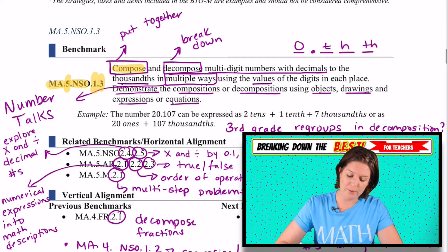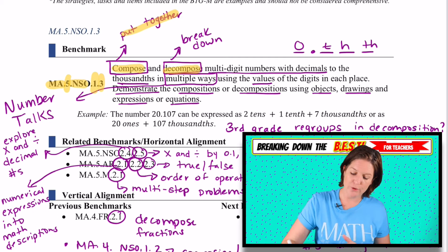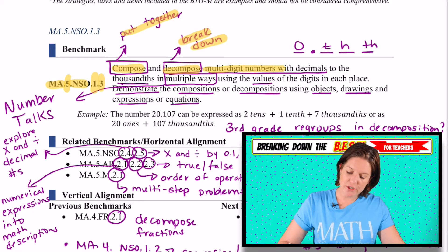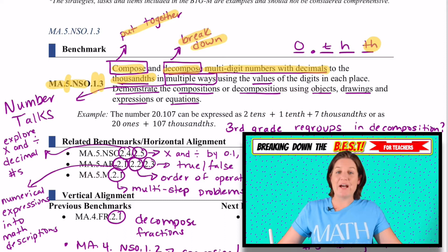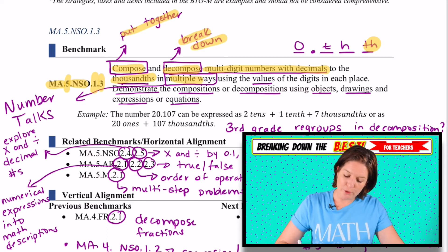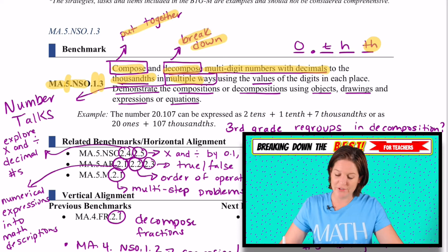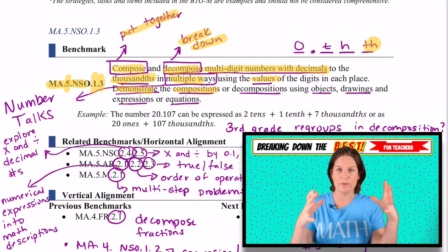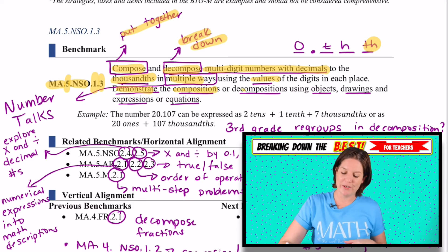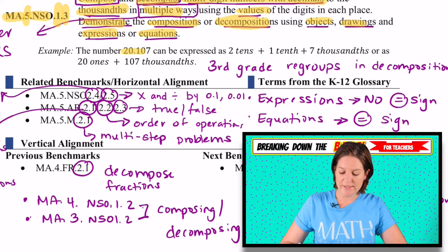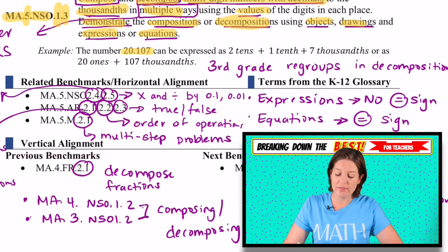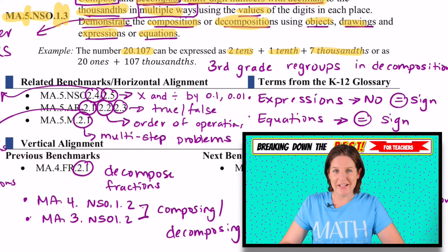It says compose, which means to put together, and decompose, which means to break down multi-digit numbers with decimals to the thousandths. So we're going all the way to the thousandths place, in multiple ways. This is a very flexible standard in that way, using values of the digits in each place. We will demonstrate the compositions, which means how we put them together, and the decompositions, how we break them apart using objects, drawings, expressions, and equations.